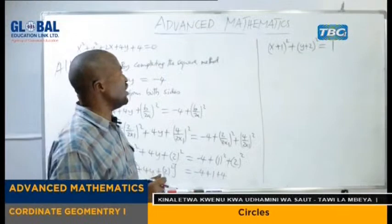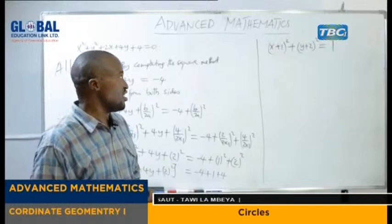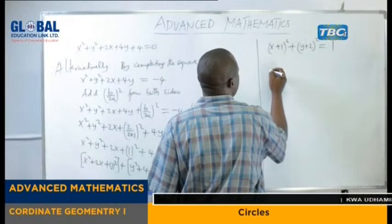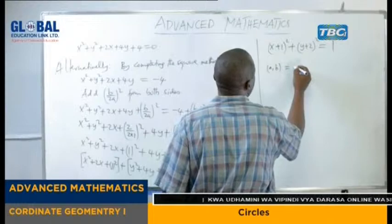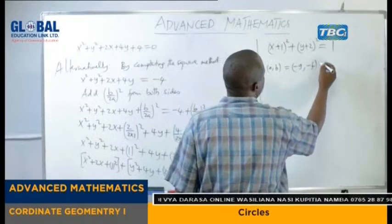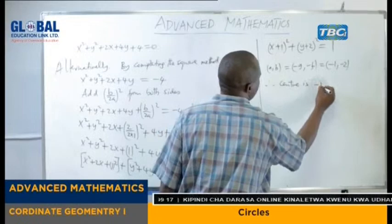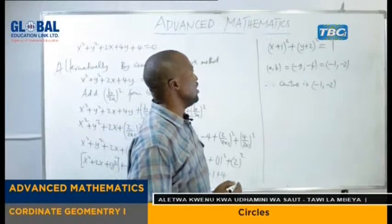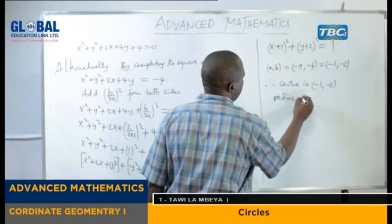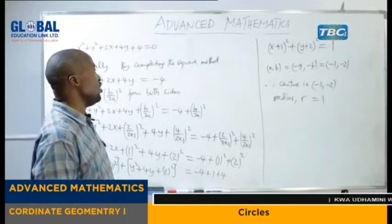So in this case it is possible to determine the center and the radius. The center — remember the center is (A, B) = (negative G, negative F) — which is the same as (−1, −2). Therefore center is (−1, −2). But again the radius: our radius will be 1, because R squared equals 1, so R equals 1. That is the alternative way of doing this question.